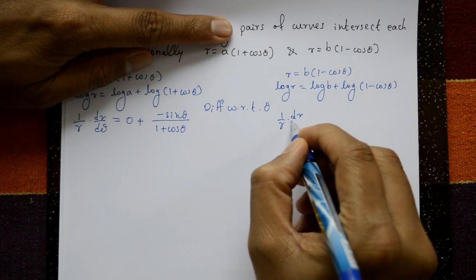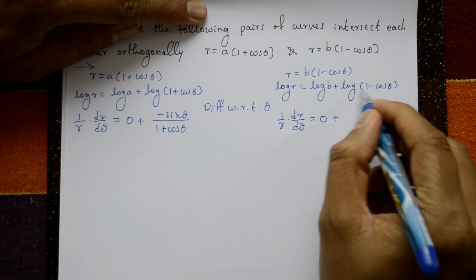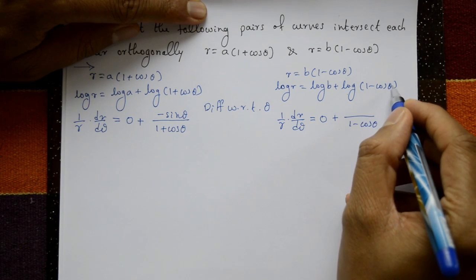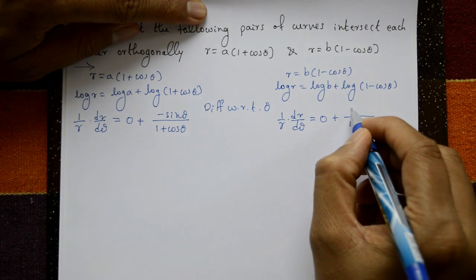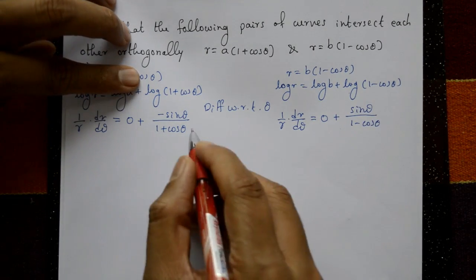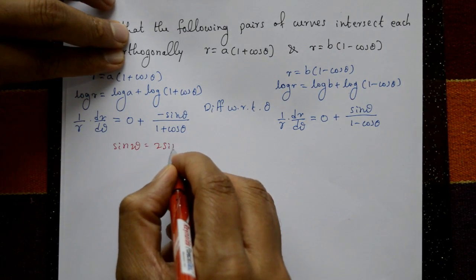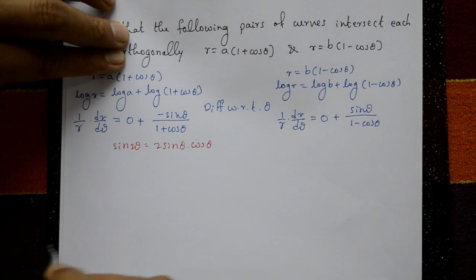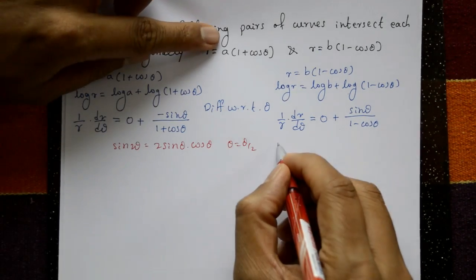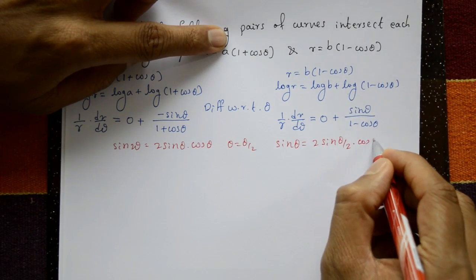For the second curve: 1 by r into dr by d theta equals 0 plus 1 upon (1 - cos theta), and differentiating (1 - cos theta) gives plus sin theta. Now recall the formula: sin 2θ = 2 sin θ cos θ. Putting theta as theta by 2, we get sin theta equals 2 sin(theta/2) cos(theta/2).